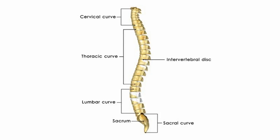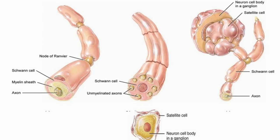Neurons are the functional and structural units of the vertebrate nervous system. They make the communication network of the nervous system and transfer impulses between sensory organs and the central and peripheral nervous systems.